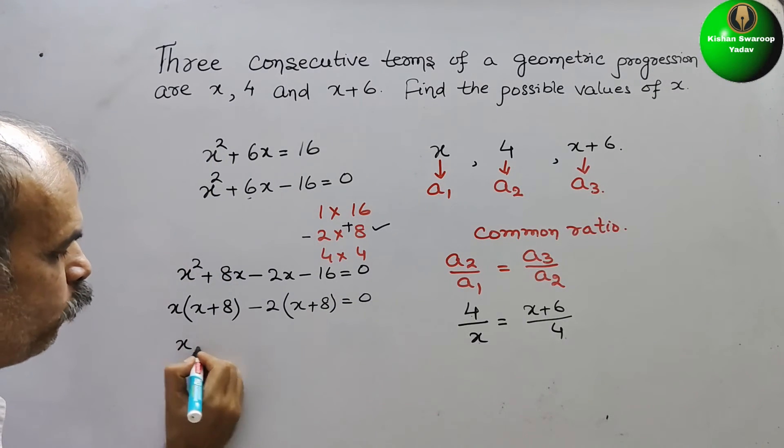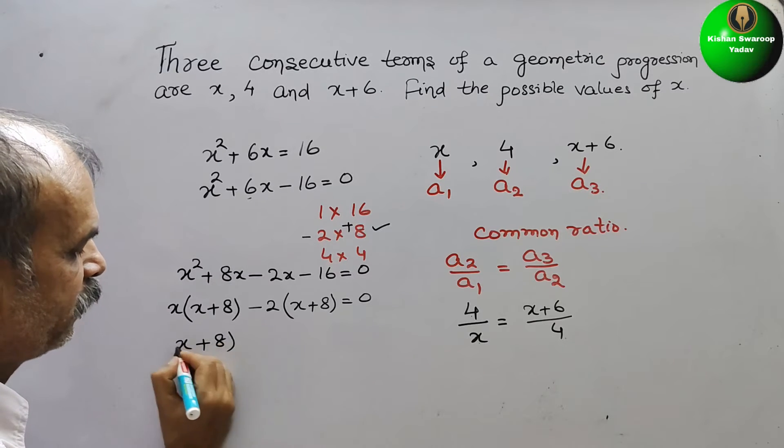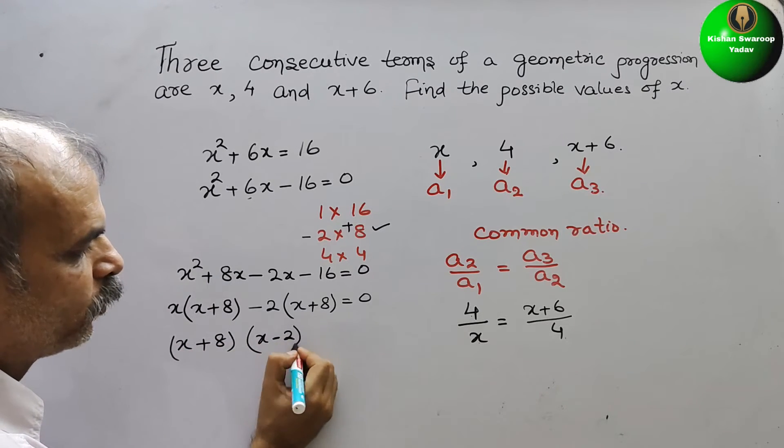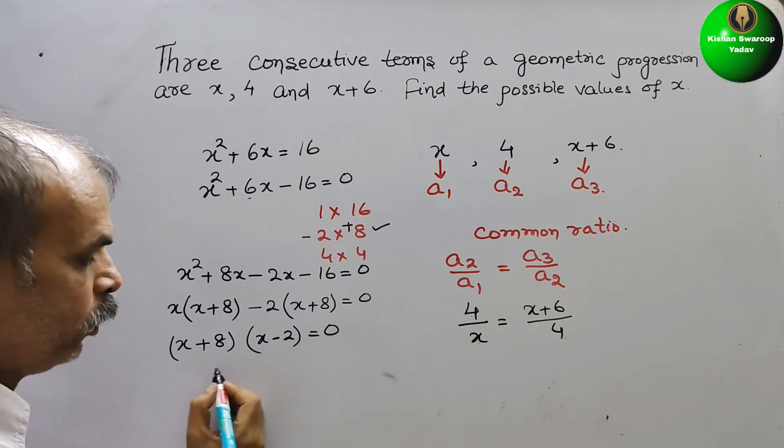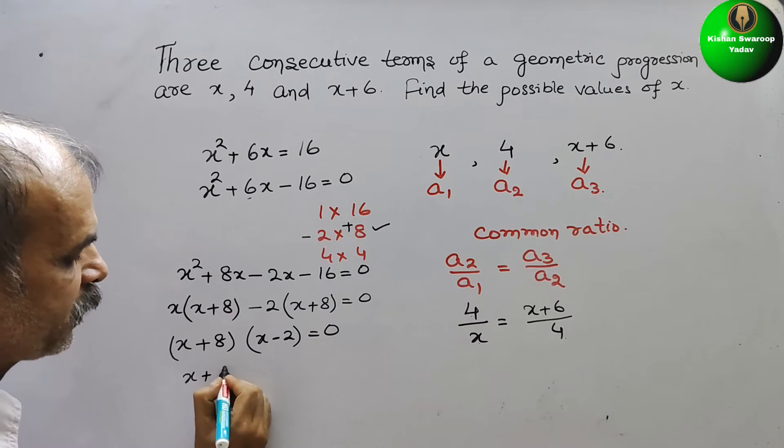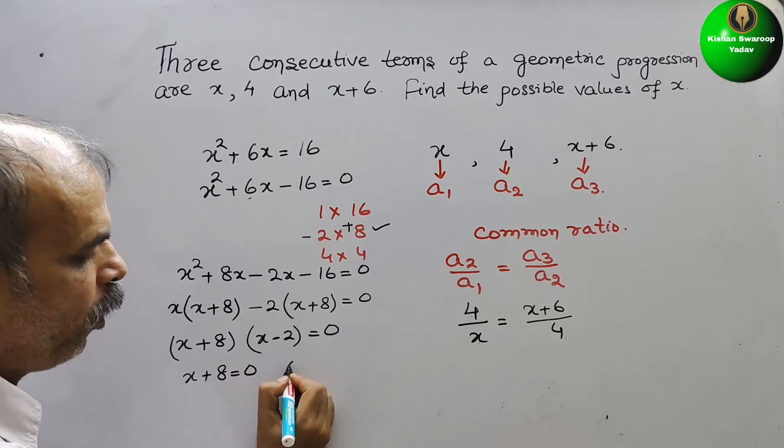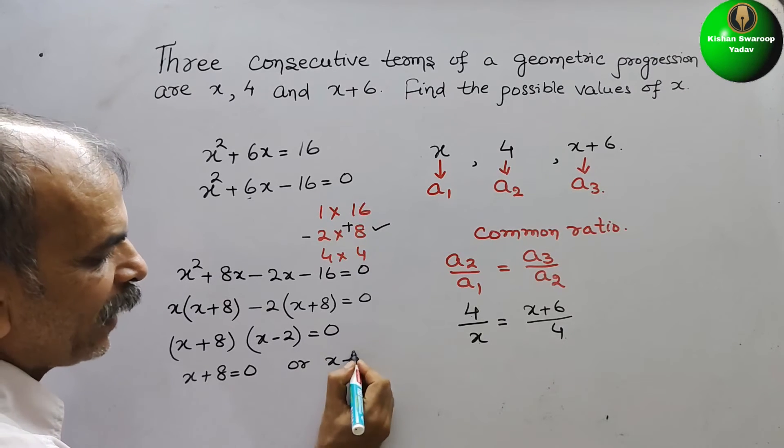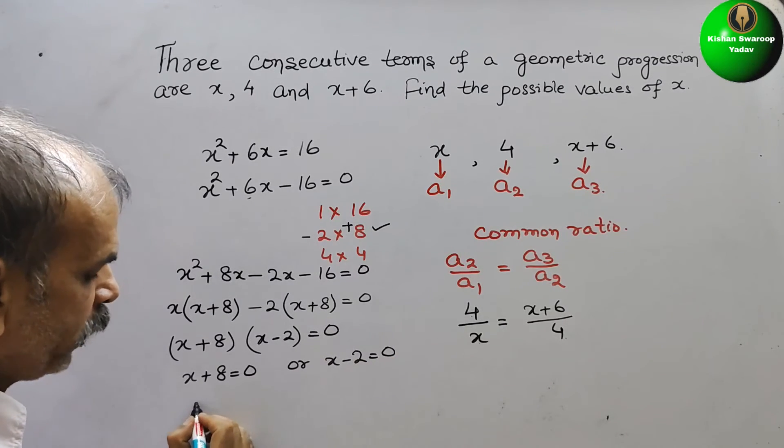Now the two factors are x plus 8 and x minus 2 equals 0. So we can say x plus 8 equals 0 or x minus 2 equals 0.